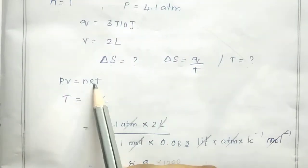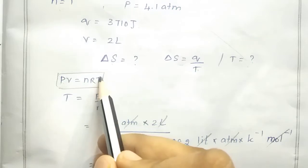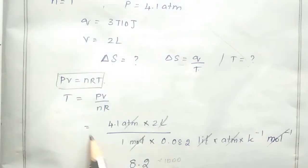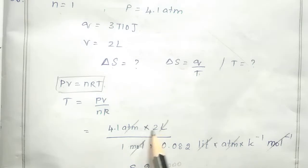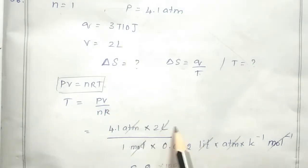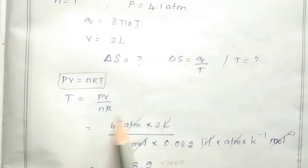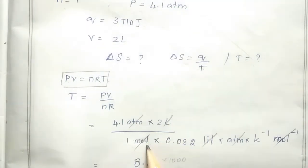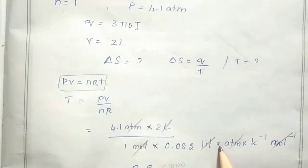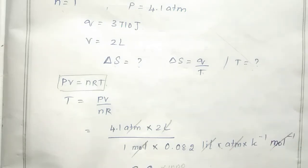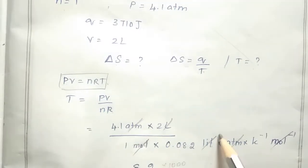T is equal to PV divided by nR. Substituting: P is equal to 4.18 atm, volume is equal to 2 L, divided by number of moles n = 1 mole, and R is the gas constant equal to 0.082 L·atm per Kelvin per mole. The atm units cancel and the mole units cancel.